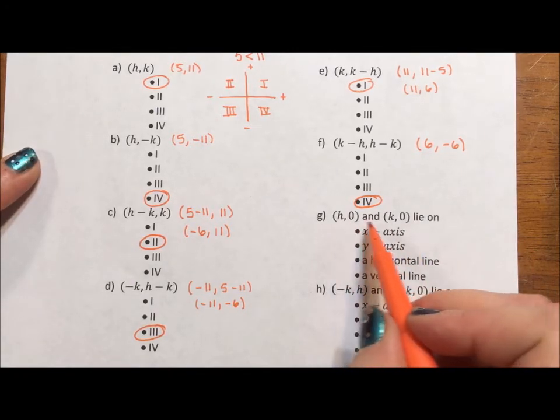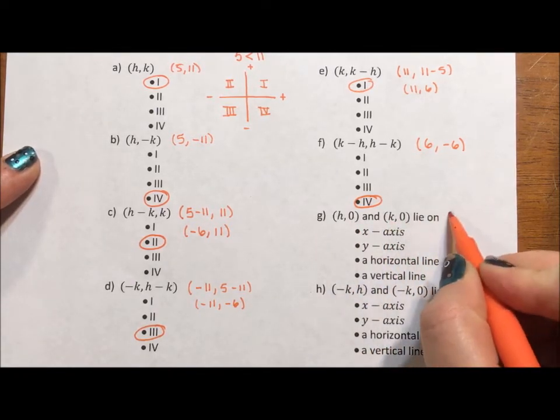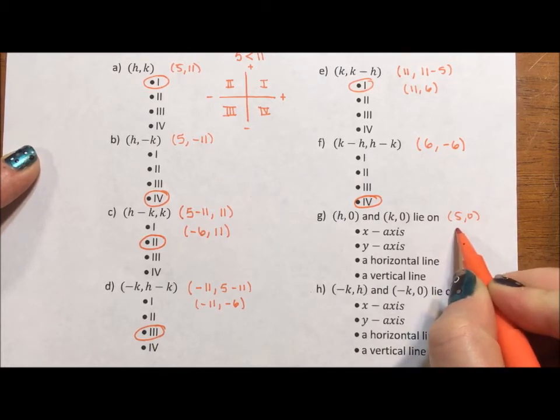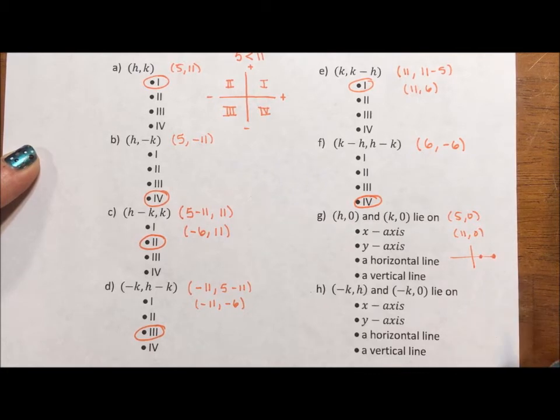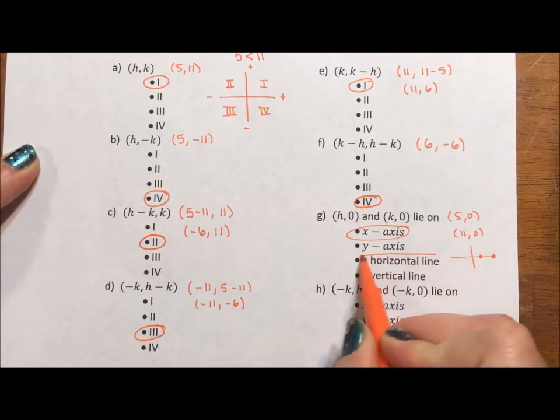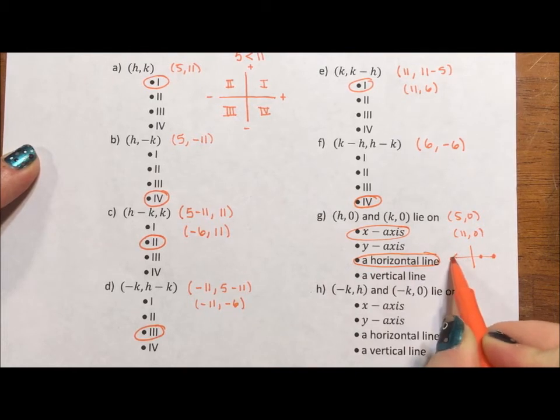Okay, h0 and k0 lie on. So we have 5, 0 and 11, 0, which is going to be 5, 0 and 11, 0. They lie on the x-axis. They also lie on a horizontal line because this line looks like the horizon, so it is a horizontal line.